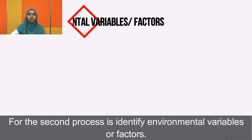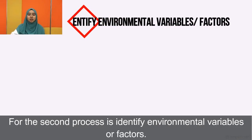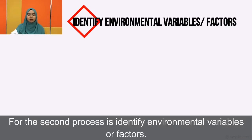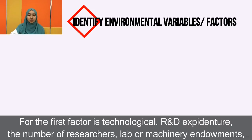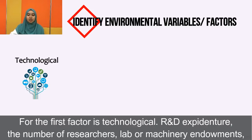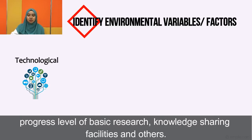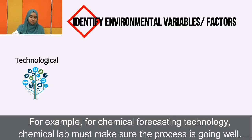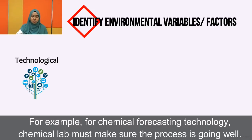The second process is to identify environmental variables or factors. The first factor is technological: R&D expenditure, the number of researchers, lab or machinery endowment, level of basic research, knowledge sharing facilities, and others. For example, for chemical forecasting technology, a chemical lab is essential to make sure the process goes well.